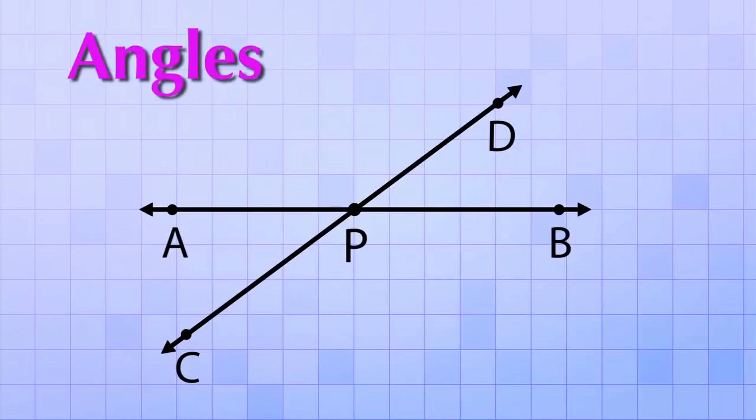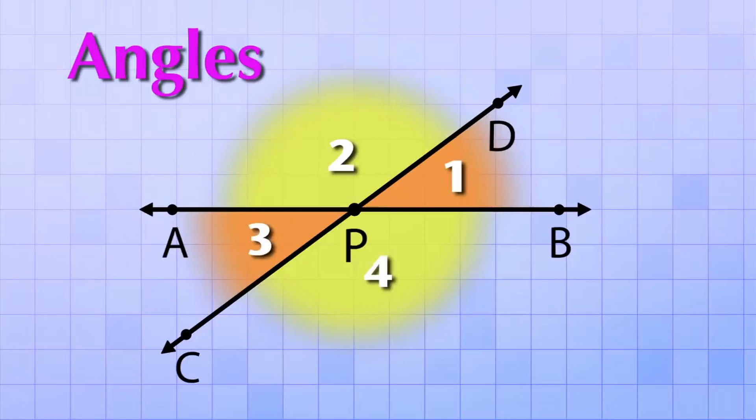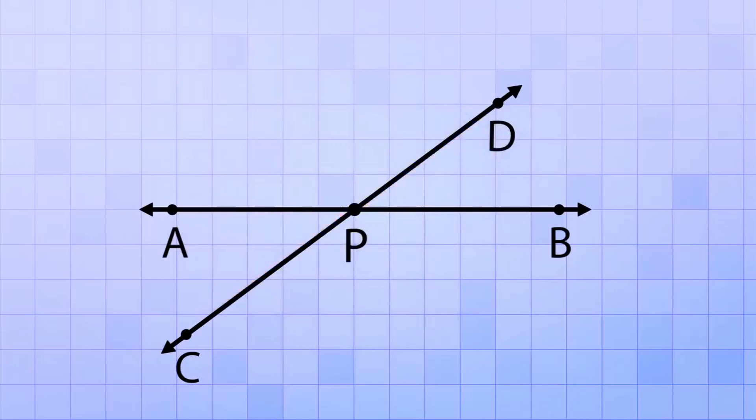If lines intersect they form angles. You can think of an angle as spaces or shades that are formed between the intersecting lines. These intersecting lines have four angles: one, two, three, and four. But instead of calling them angle one, two, three, and four, in geometry, we name them by the points used to form them.